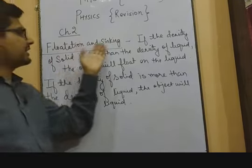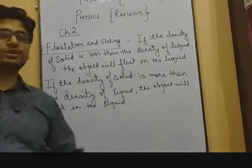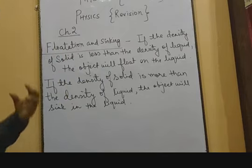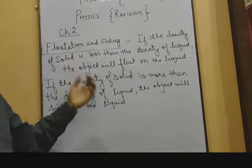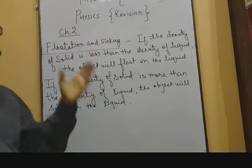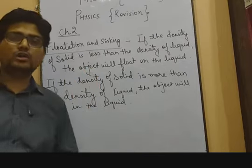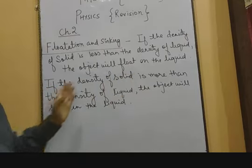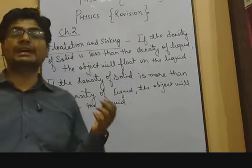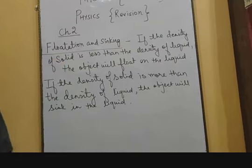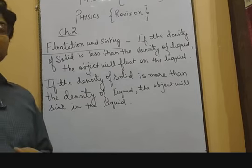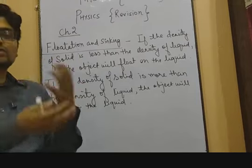Regarding flotation and sinking: if the density of a solid is less than the density of the liquid, the solid will float on the liquid. If the density of the solid is greater than the density of the liquid, the solid will sink. This is how we determine whether an object — like a ship — will float or sink, based on whose density is greater.